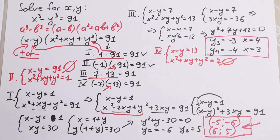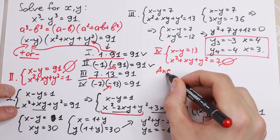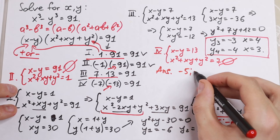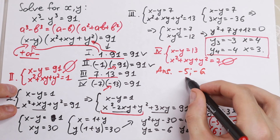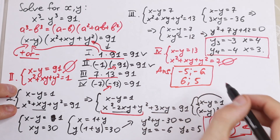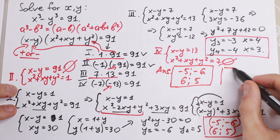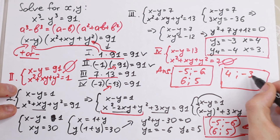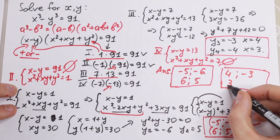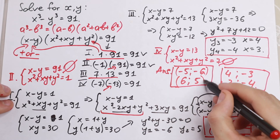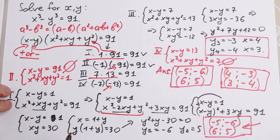So our final answer consists of four pairs of solutions: (minus 5, minus 6), (6, 5), (4, minus 3), and (3, minus 4). Cases 1 and 3 each gave two pairs, while cases 2 and 4 had no solutions.